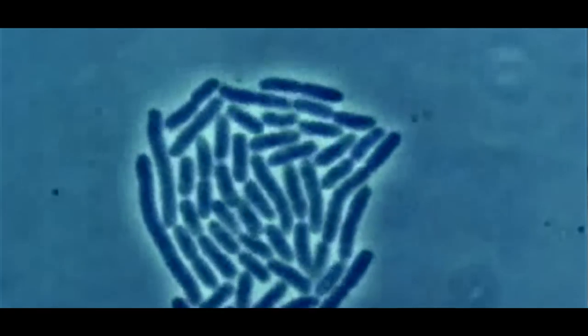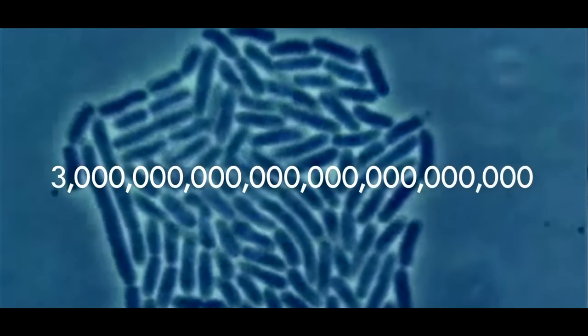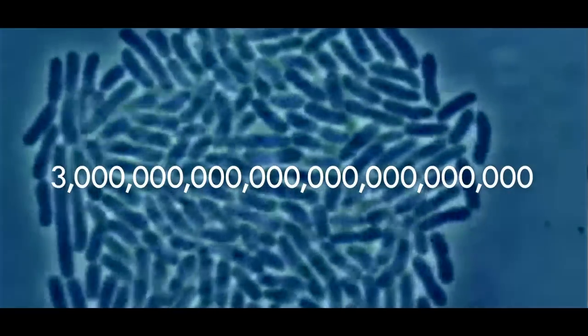Take this number: 3 septillion. That's 24 zeros, and it's just the number of bacteria in all the cow's stomachs on Earth.